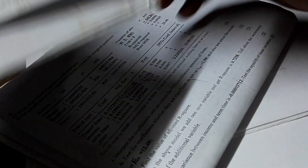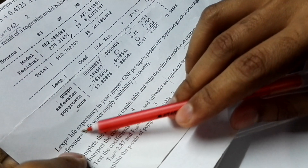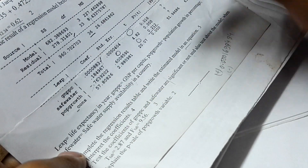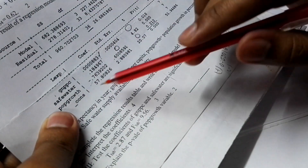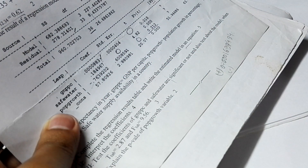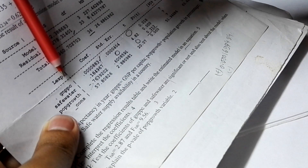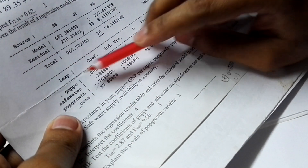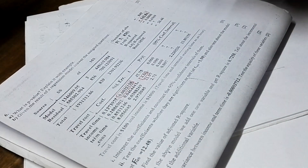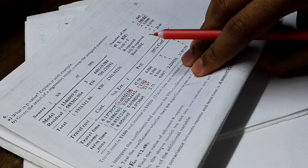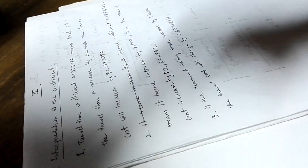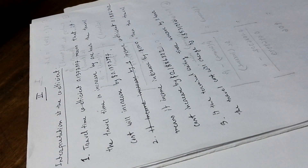If there is a positive relationship, the dependent variable increases by this amount. But if there is a negative relationship — like life expectancy having a negative relationship with population growth — it means if population growth increases, life expectancy decreases by that amount, or if population growth decreases by one percent, life expectancy increases by that amount. This is the interpretation of the coefficients.